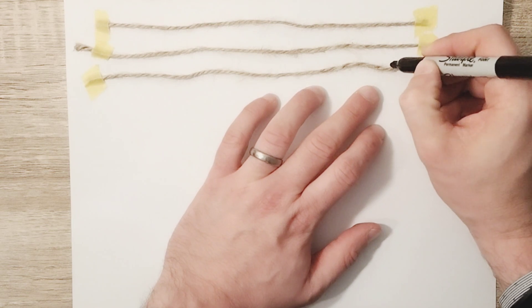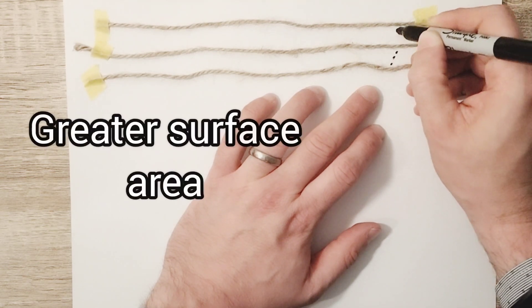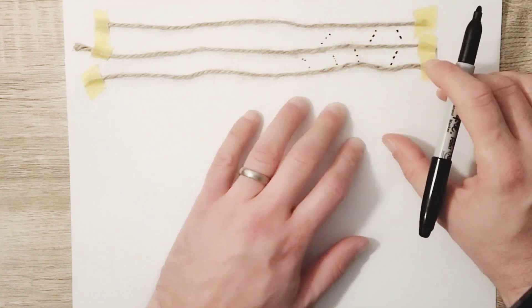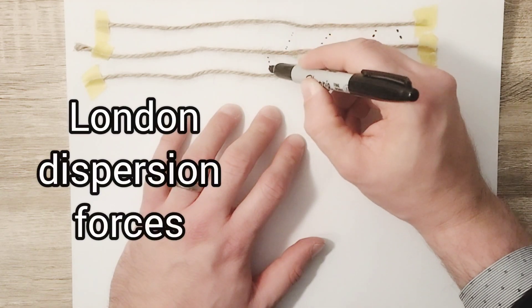Now long-chain molecules like these have a greater surface area and many points of contact for the formation of intermolecular forces known as London dispersion forces.